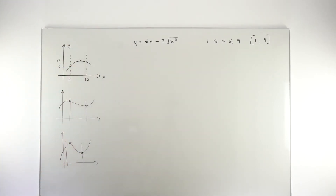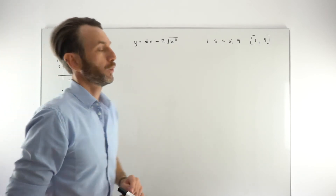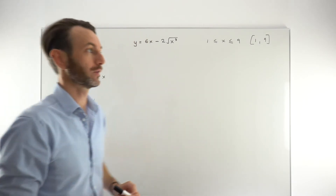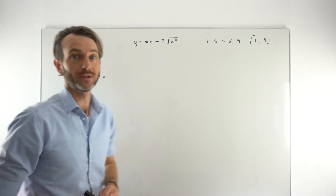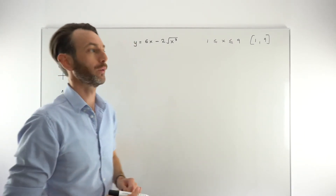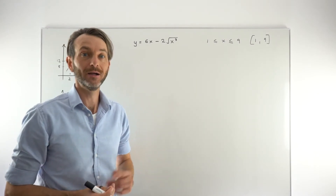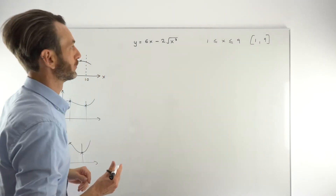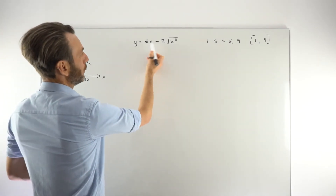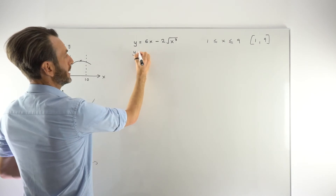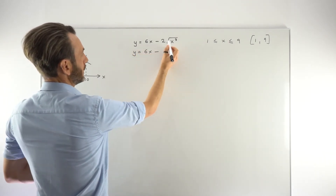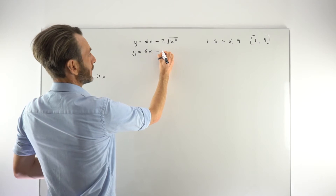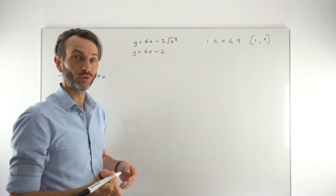Because we need to work with stationary points, we need to think about differentiation. We find the first derivative, set it equal to zero, and solve that equation. So we want to differentiate our function. It's not in a differentiable form, so let's start by putting it into one. The 6x term is fine, but the square root of x cubed is a strange function. I'm going to change that using the power rule and write it as 2x to the power of 3 over 2.